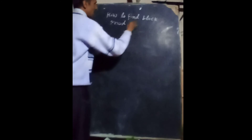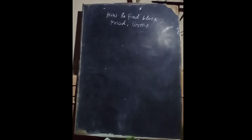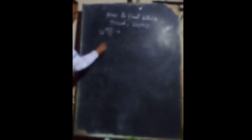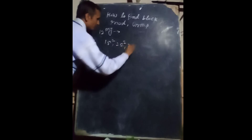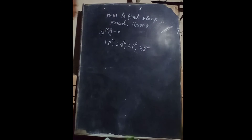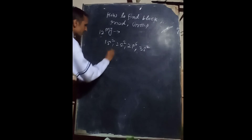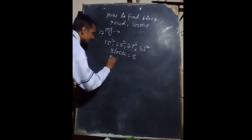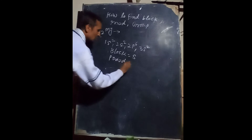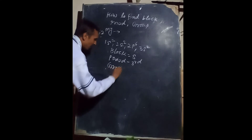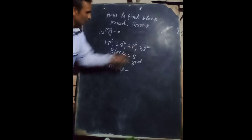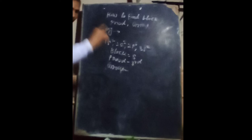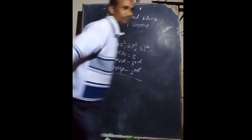To find block, period, and group, let's take the example of number 12, which is magnesium. The electronic configuration is: 1s², 2s², 2p⁶, 3s². The last electron goes into the s sub-orbit, so the block is the s block. The highest energy level is 3, so it is the third period. For the group: the s sub-orbit has 2 electrons and s can hold only 1 or 2, so magnesium is in group 2.